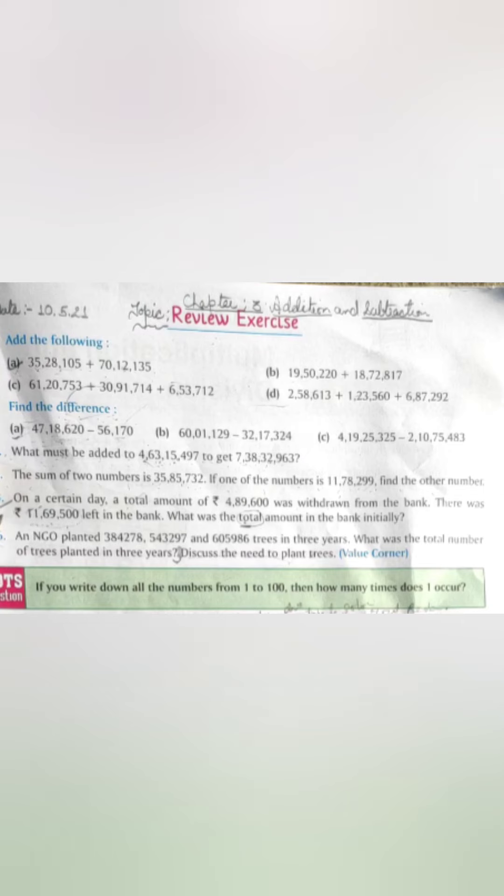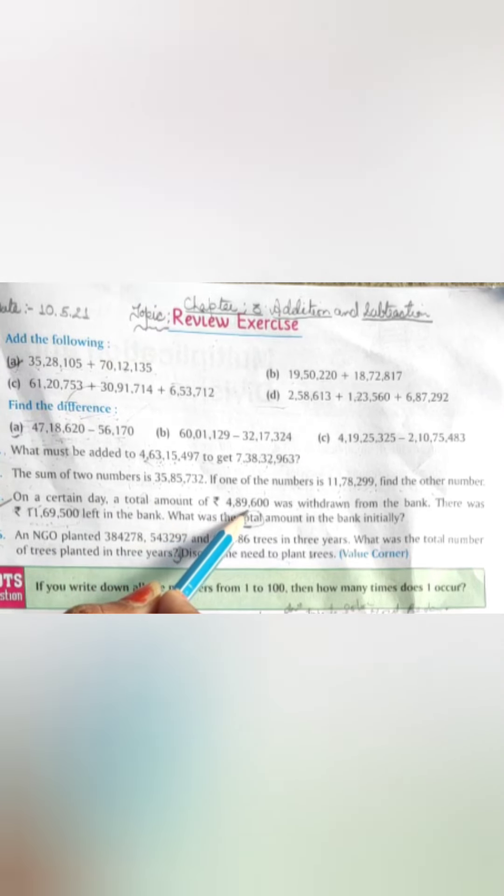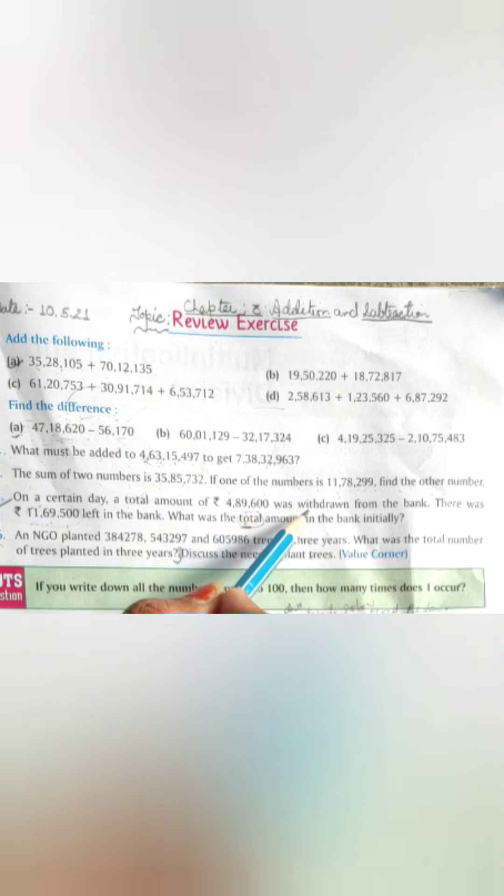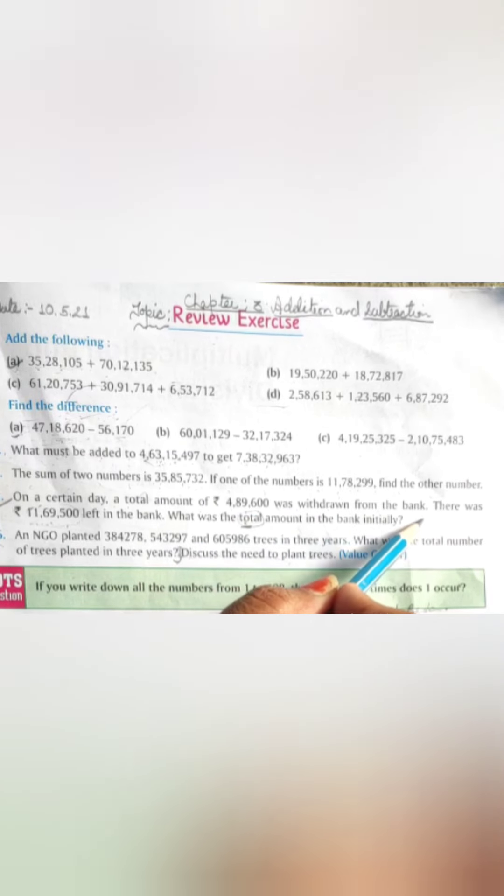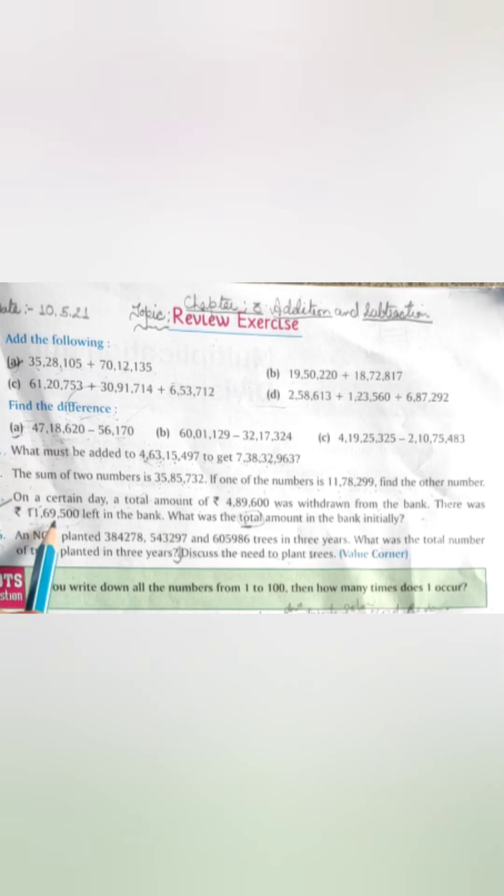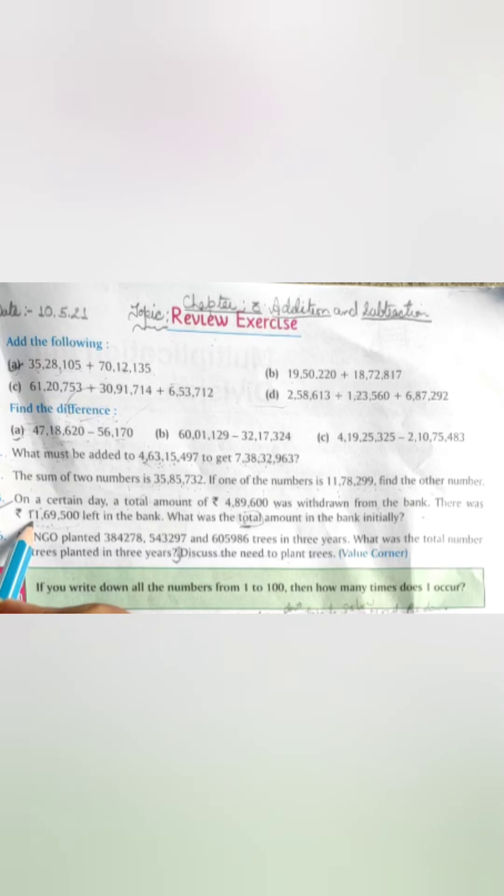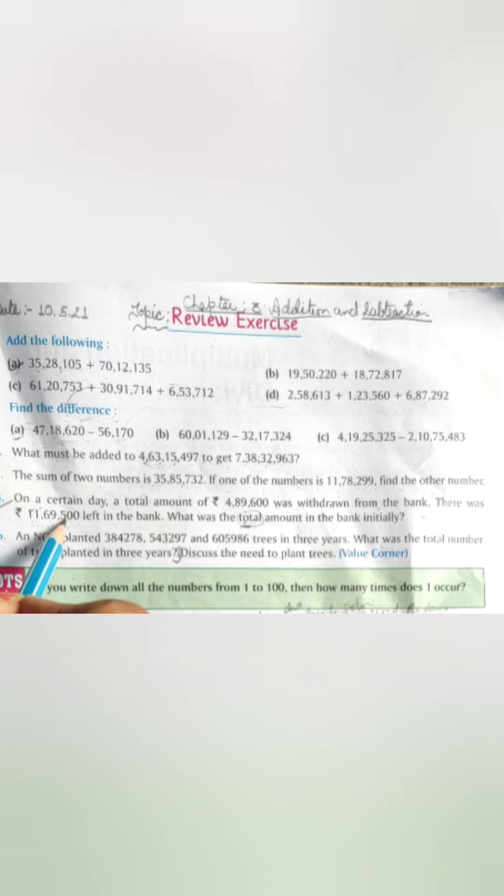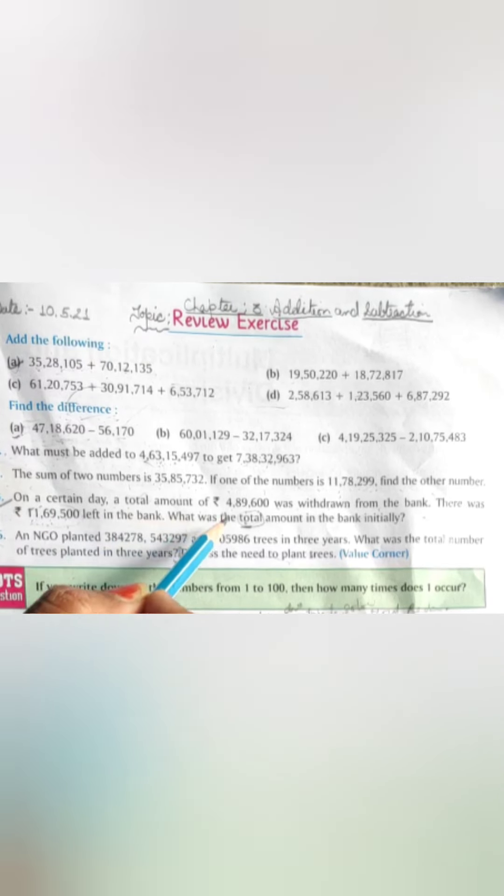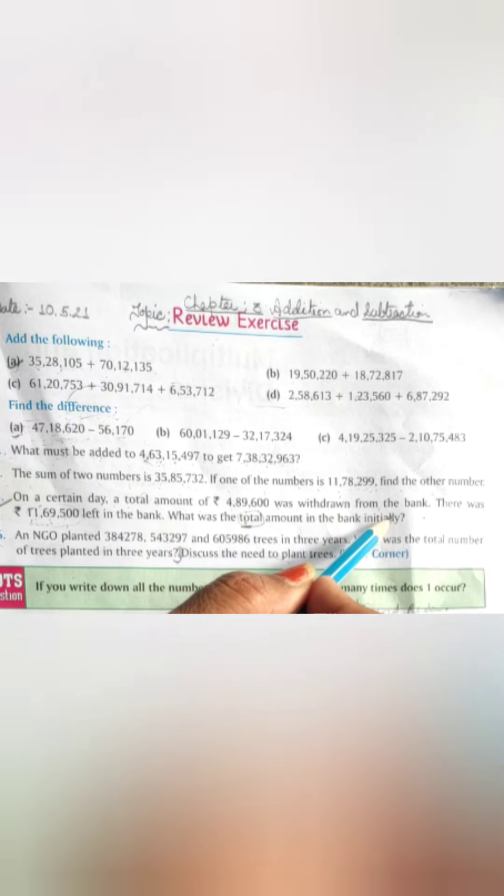Now in question number 5, on a certain day, a total amount of Rs. 4,89,600 was withdrawn from the bank. Withdrawn means taken out. There was Rs. 11,69,500 left in the bank. What was the total amount in the bank initially?